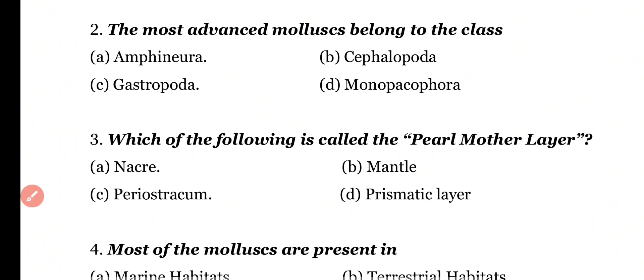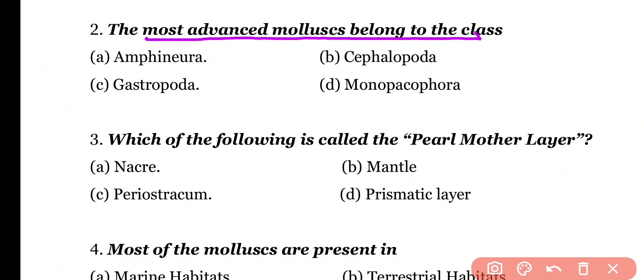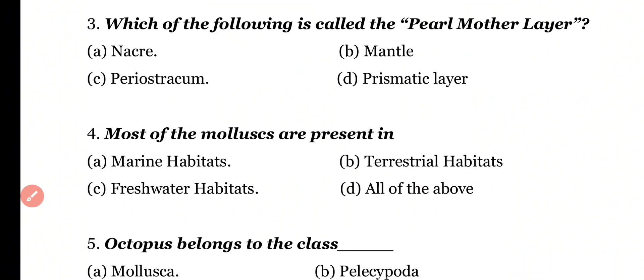Question number 2: The most advanced Mollusca belongs to which class? Options: Amphineura, Cephalopoda, Gastropoda, Monoplacophora. Correct answer is option B. The most well-developed and advanced Mollusca belongs to the class Cephalopoda.